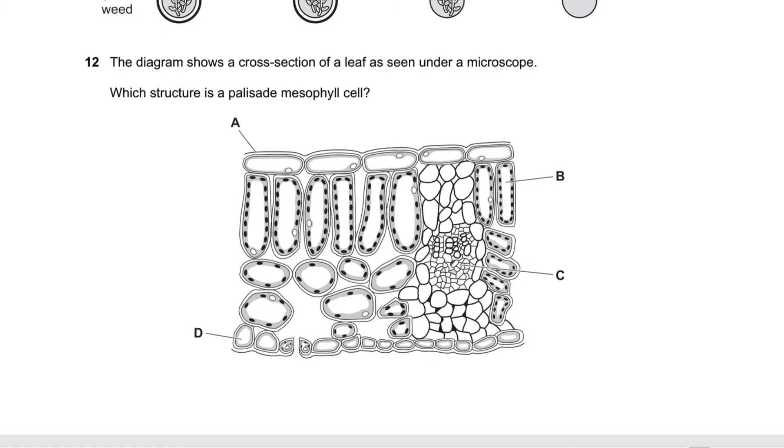Question number 12 says the diagram shows a cross section of a leaf as seen under a microscope. So it's not A. This is yes, that's the vascular bundle, more specifically the xylem. And these are lower epidermis.